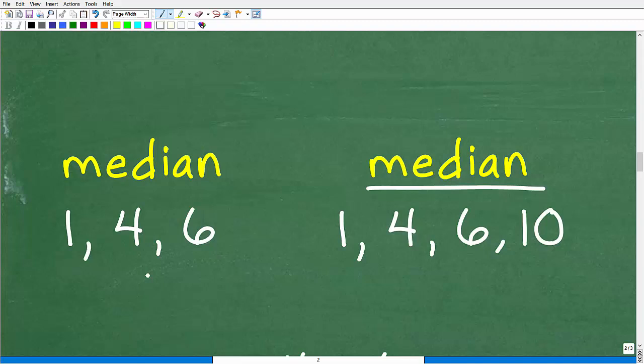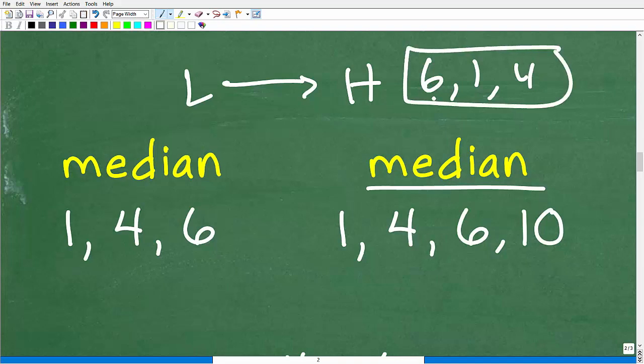Well, here is what the median is. All the median is, is when we have our data, our values, our information that we're looking at, we want to write this in lowest to highest order. So you can see here we have 1, 4, 6, not 6, 1, and 4. Now if I gave you the numbers here 6, 1, and 4, we'd have to reshuffle these and put them as lowest to highest. So that's very important that you do this first.